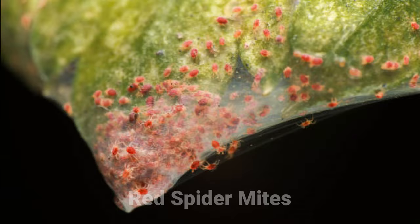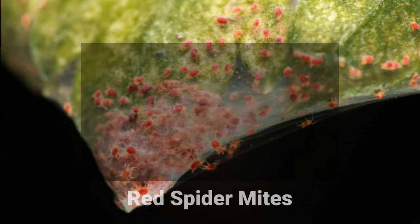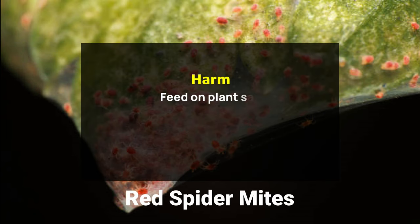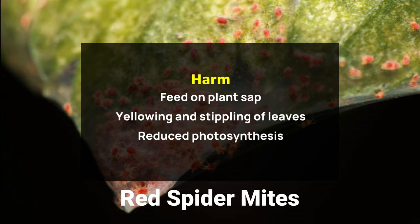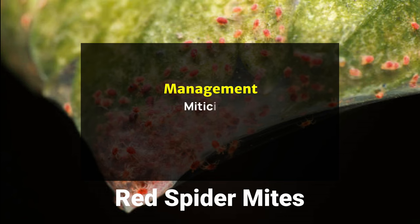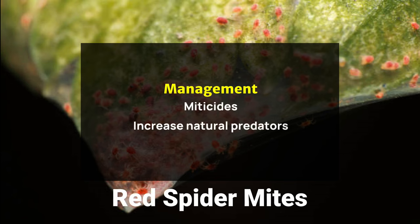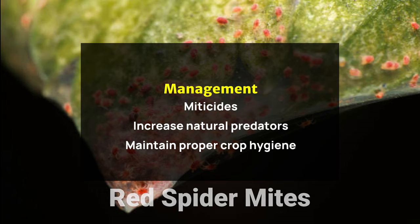Red Spider Mites harm: red spider mites feed on plant sap, causing yellowing and stippling of leaves, which can lead to reduced photosynthesis and yield loss. Management: these can be controlled by using miticides, increasing natural predators like predatory mites, and maintaining proper crop hygiene.